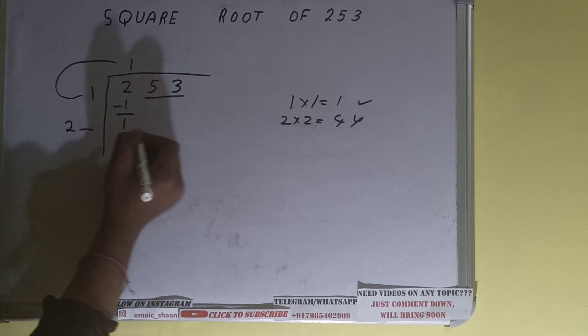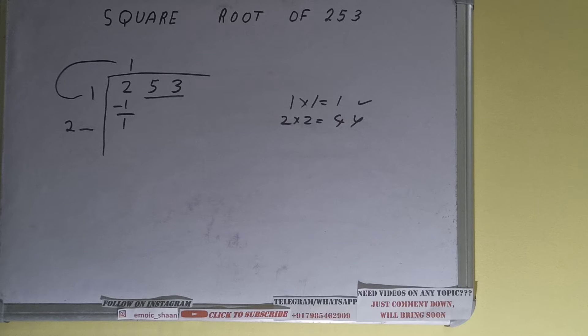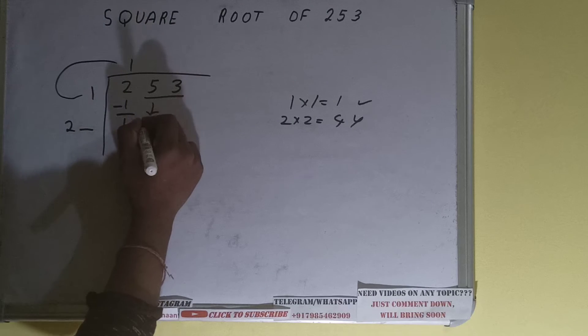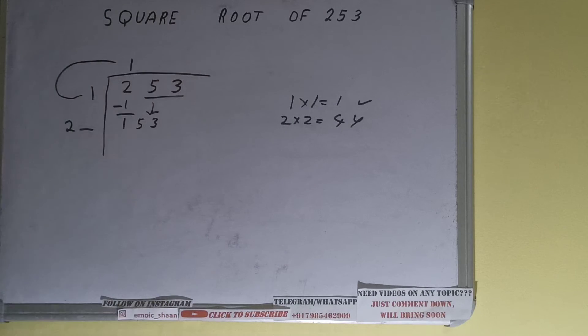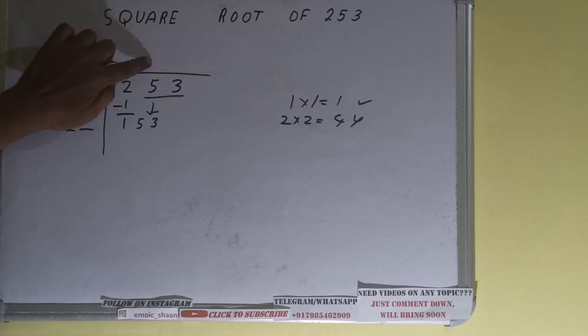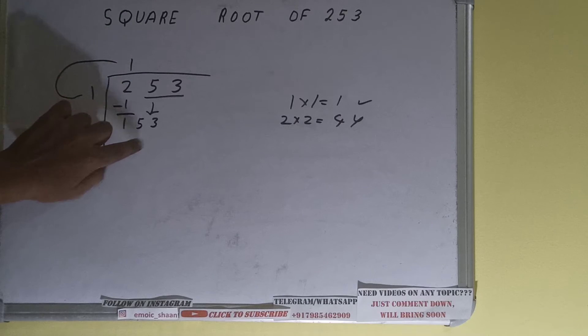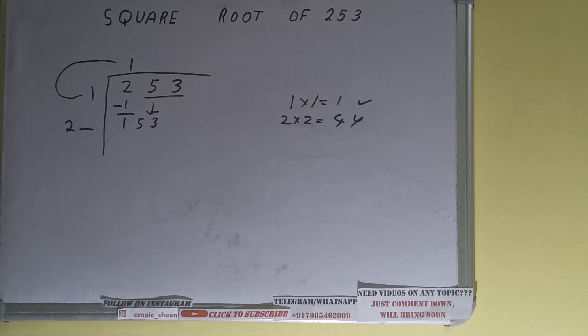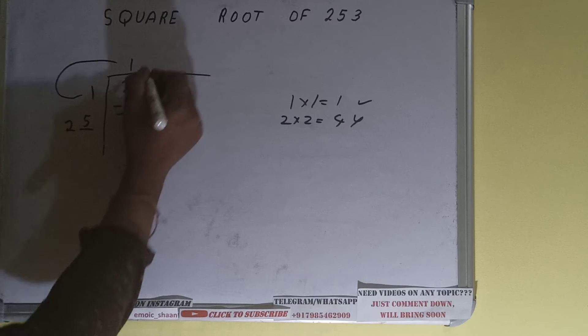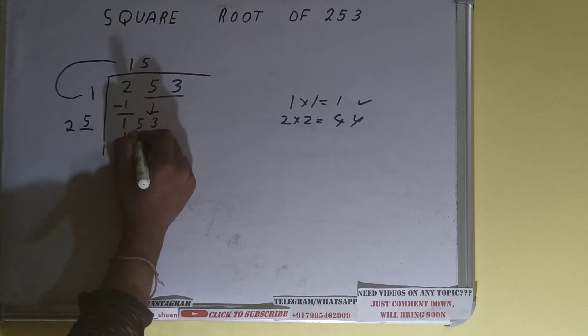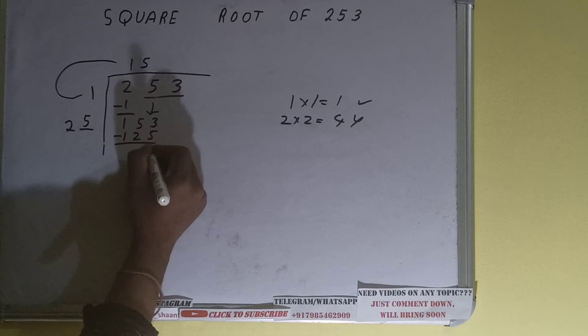Keep one digit extra over here. We need to make this number big so that we can divide, so bring the next pair down and it will become as 153. Now whatever number we write here we have to write here also. If we write six here and six here we'll get 156, which is greater than 153, we cannot use that. So we have to try with five. Five here and five here will give 125. Subtract it and we'll be having 28.